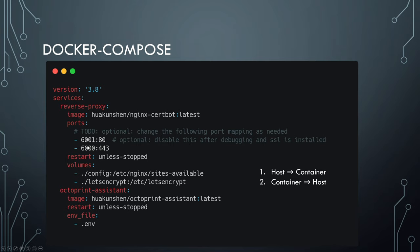You can change the ports as needed, but make sure port forwarding is configured the same way. Volumes are very important — the default configuration file in the config folder is mapped to the sites-available folder, and the Let's Encrypt folder is mapped to /etc/letsencrypt. There are two ways to generate SSL certificates: on the host, saved to that location and shared with the container; or within the container, saved inside it and also shared with the host via the volume. Even if containers are removed, certificates remain on the host. The second service is OctoPrint Assistant, using the same Docker image as the first method, with the .env file passed to it.